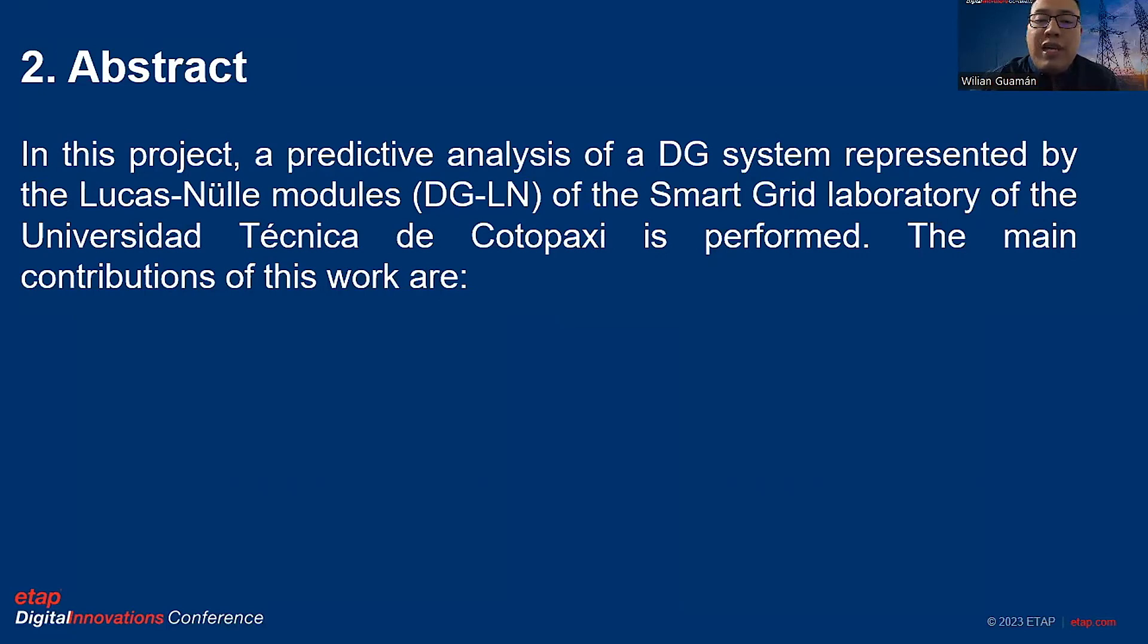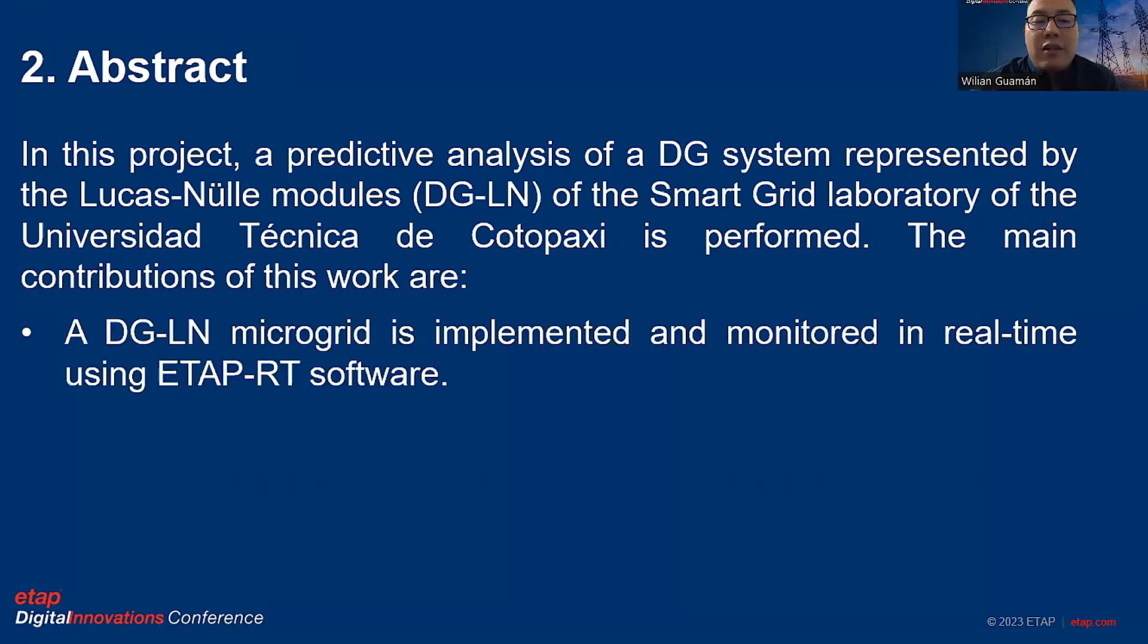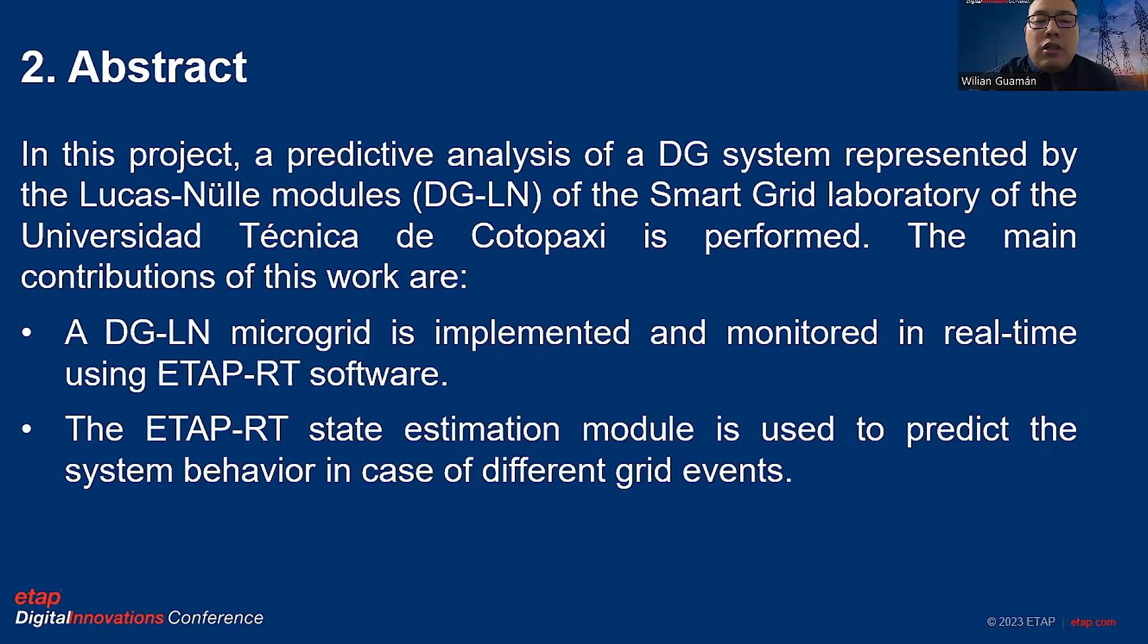The main contributions of this work are two. First, a distributed generation LucasNeo micro-grid is implemented and monitored in real-time using ETAP RT software. Second, the ETAP RT state estimation model is used to predict the system behavior in the case of different grid events.